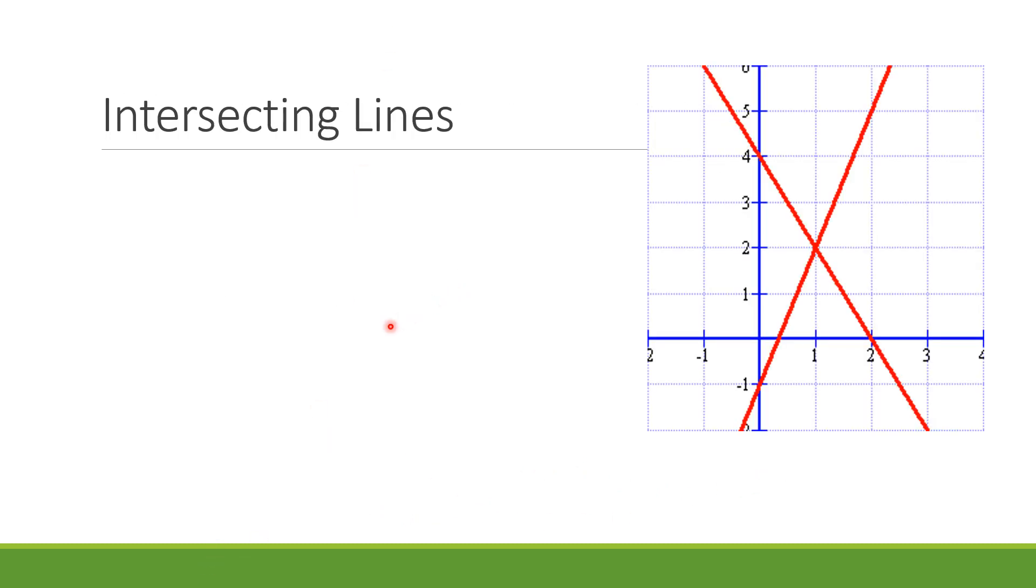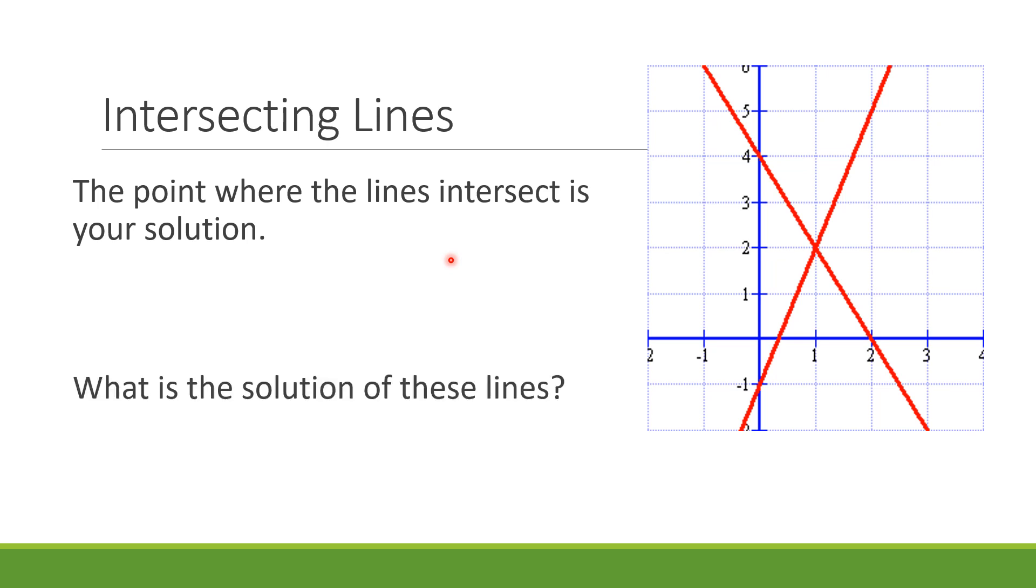First, we have intersecting lines. You are already familiar with this - two lines that cross each other. The point where the lines intersect is your solution. If you examine it closely, you can see that the coordinates are (1, 2), so this point is the solution.